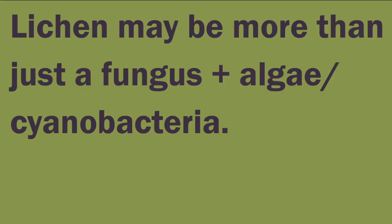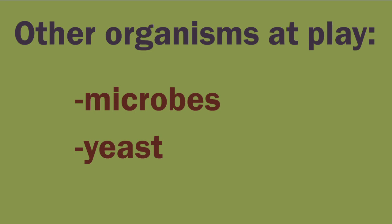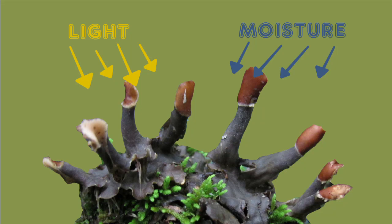A lichen symbiosis is a balancing act. If one of the organisms grows faster than the other, the lichen will often break down. Scientists have been unable to recreate lichens in the lab by putting together fungi and their associated photobionts. It's been suggested that microbes may play a role, and recently research has uncovered that yeast may play a part in helping lichen form. When lichen dries out it goes into a dormant state, but if I were to re-moisten this and put it in the right conditions, it would come back to life.